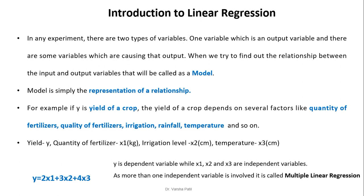The yield of crop is given by x1, x2, x3, but the equation is 2x1 plus 3x2 plus 4x3. The aim of linear regression is to find out the parameters associated with x1, x2, x3 in such a way that when we provide the values of x1, x2, x3, it will predict the yield of the crop. Here y is the dependent variable while x1, x2, x3 are independent variables. As more than one independent variable is involved, it is called multiple linear regression.